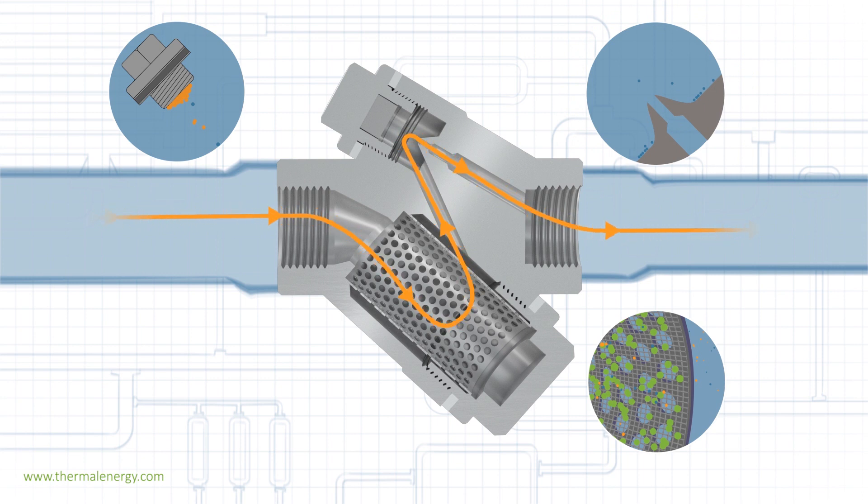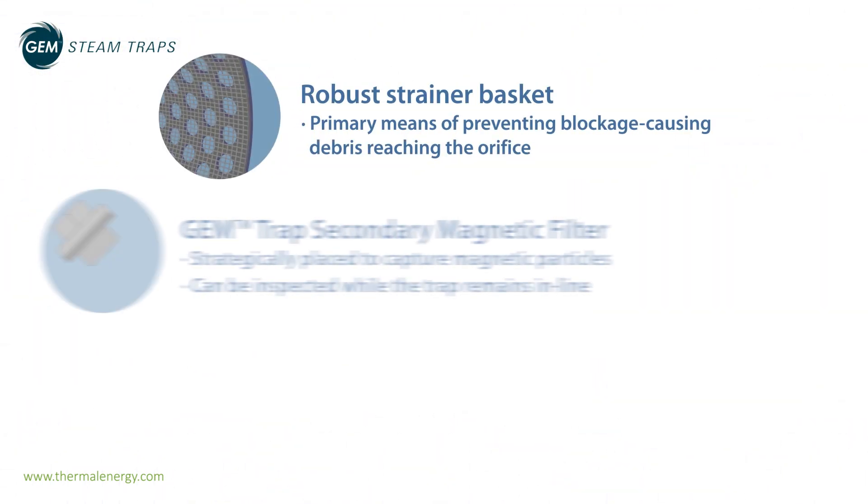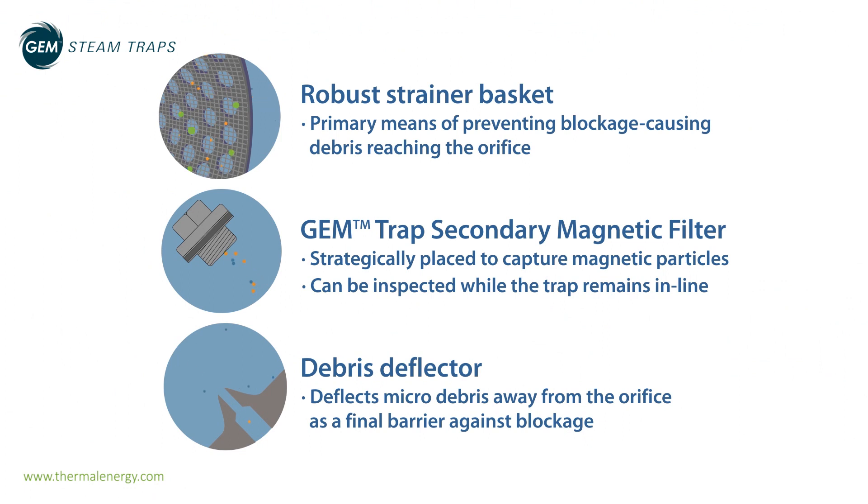Why is this important? For larger processes, due to the orifice size required to accommodate flow rates, blockage is not a significant concern. However, for line drainage, trace heating, and other small-duty applications, a small orifice is required to operate efficiently. Here, protecting the orifice from blockage and ease of maintenance are important factors.